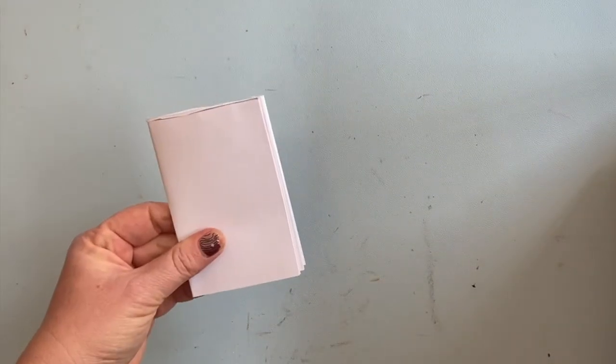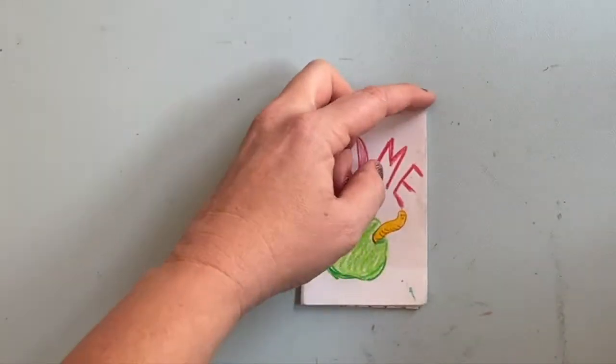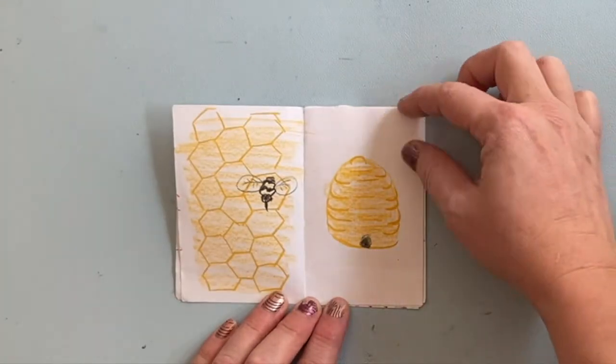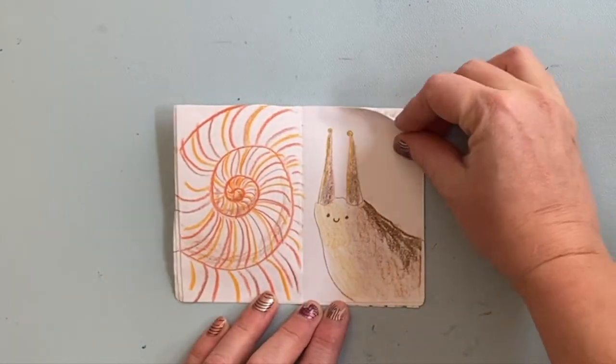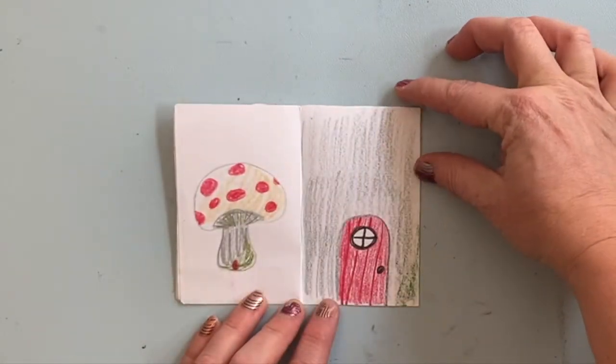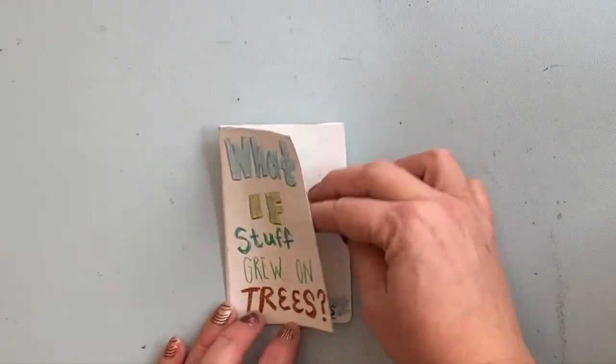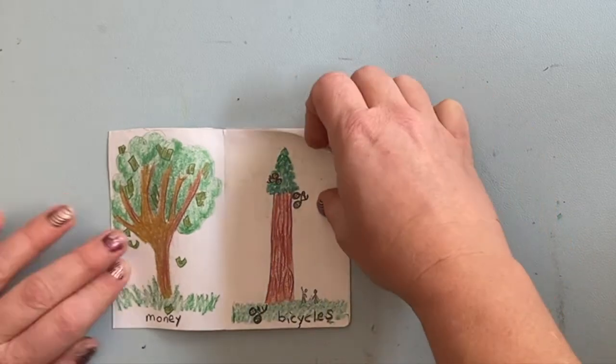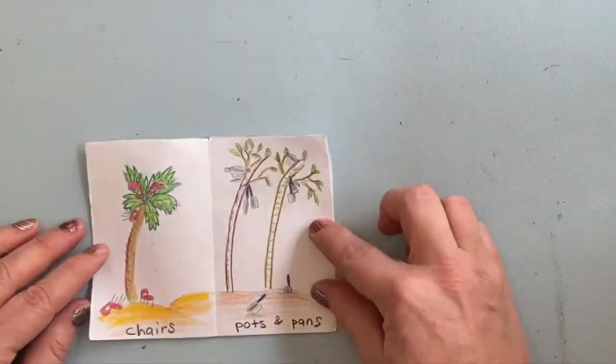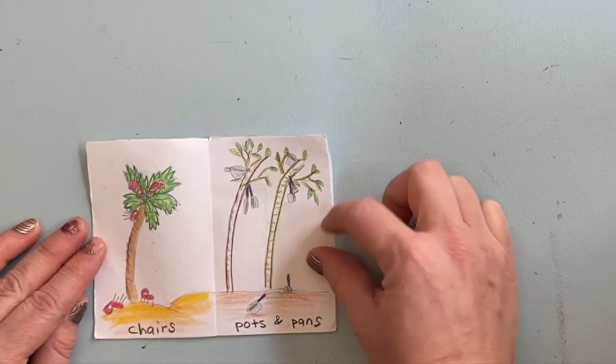Ta-da! Here's your mini zine. Now you can draw anything you want on the pages of your zine. I recommend using crayons or colored pencils, because if you use markers the ink will bleed through to the other side. You could draw, you can add stickers, anything you like.